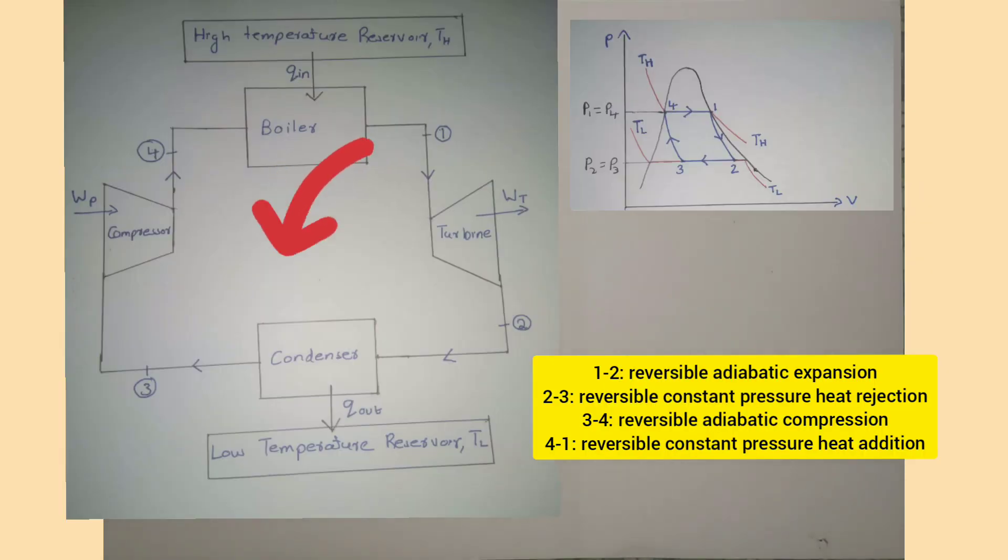This schematic diagram is shown. It has four components: boiler, turbine, condenser, and compressor.